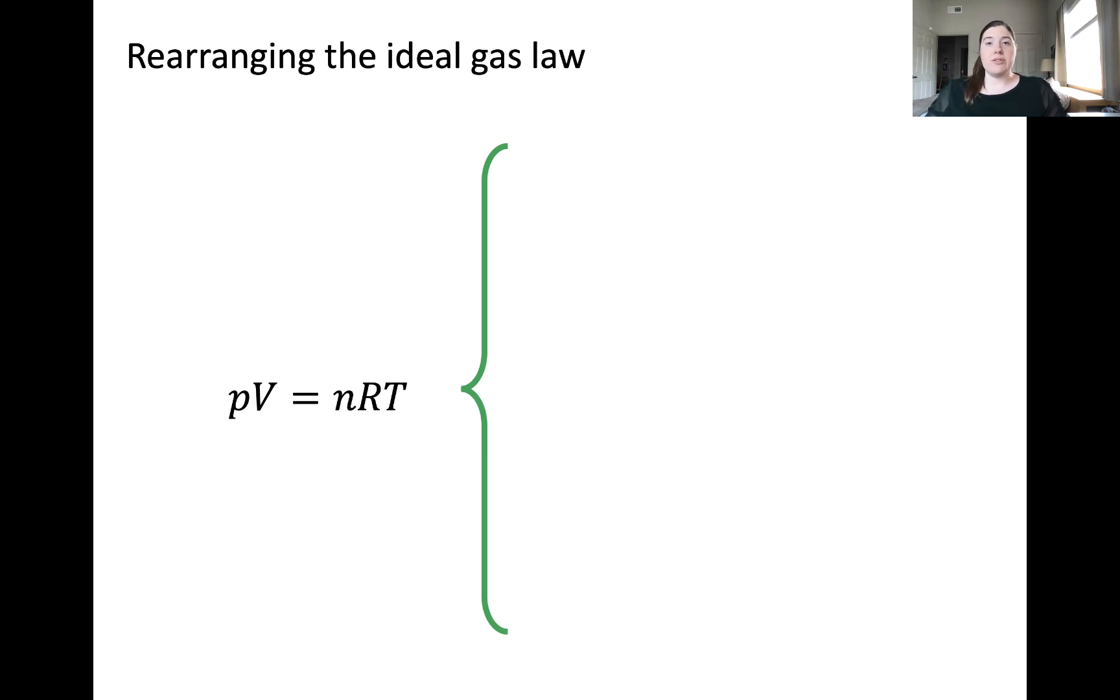It's very important that you feel comfortable rearranging the ideal gas equation to solve for variables of interest. Typically, you'll be given information about all variables in the system except one, which you're expected to solve for. If you solve for pressure, you can divide both sides by volume and obtain this expression. Solving for volume, divide both sides by pressure and obtain this expression. Solving for the number of moles, both sides can be divided by RT to obtain this expression. And solving for temperature, both sides can be divided by nR. You don't need to memorize all of these different expressions as they're just rearrangements of this initial equation. As long as you're familiar with this equation, you can solve for any variable that you need.